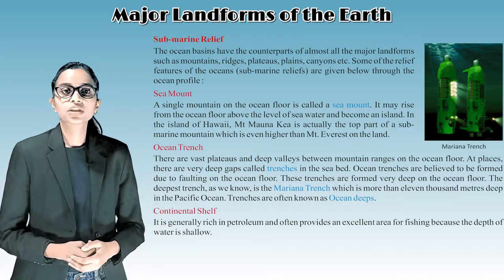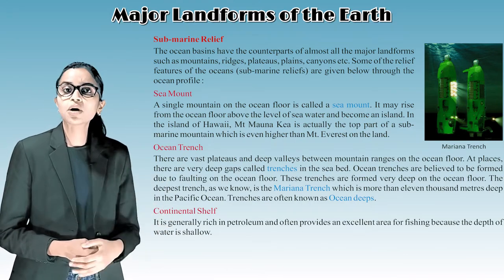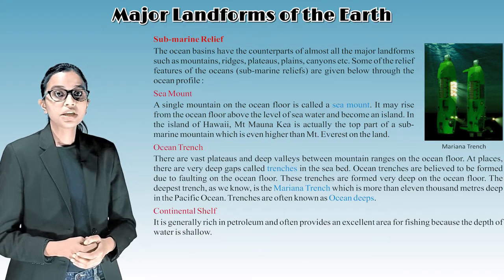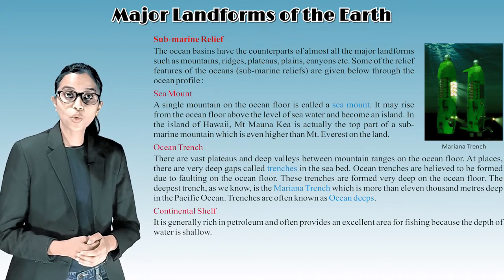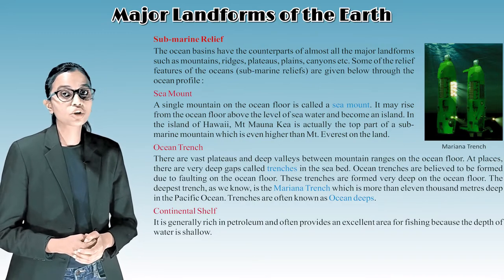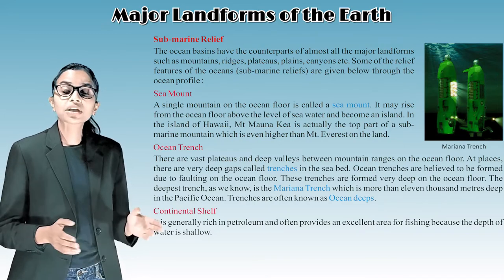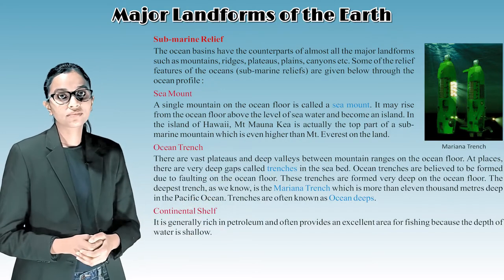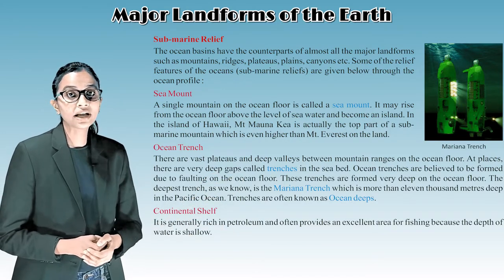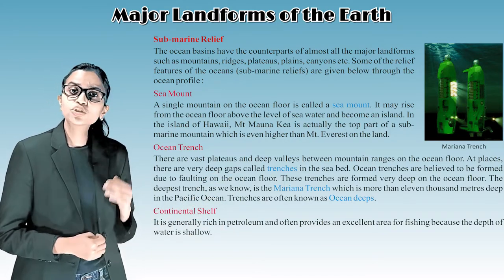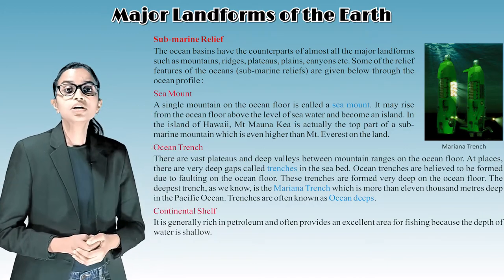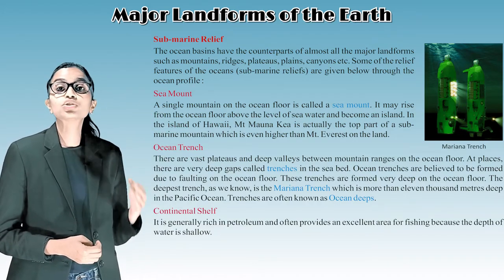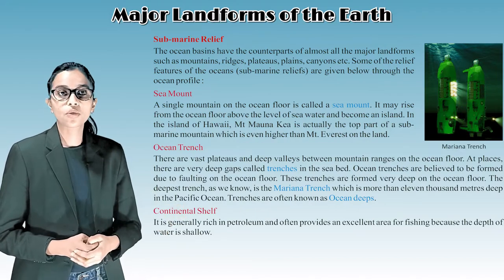Sea mount: a single mountain on the ocean floor is called a sea mount. It may rise above the level of seawater and become an island, as in the island of Hawaii. Mount Mauna Kea is actually the top part of a submarine mountain which is even higher than Mount Everest on land.